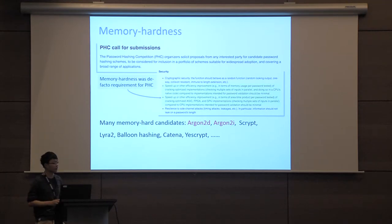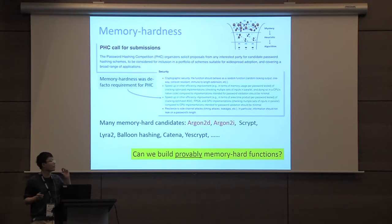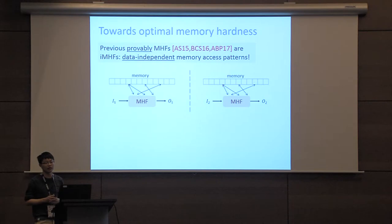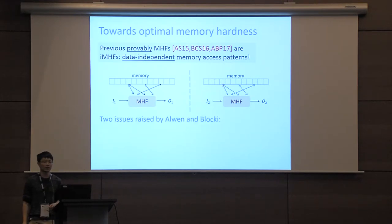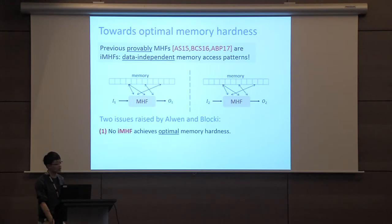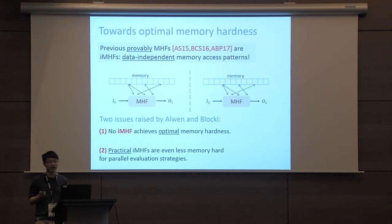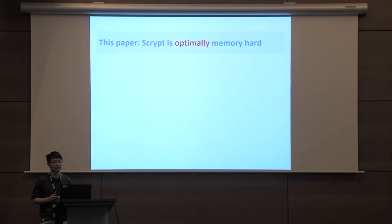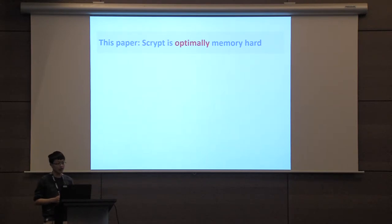Ideally we would like to prove that these functions are memory hard, but finding such proofs is a difficult problem. The answer is yes — several elegant MHFs were designed and proved to have memory hardness. However, these MHFs belong to the category of IMHFs whose memory access patterns are input-independent. Recently, Alvin and Blocki raised two issues: no IMHFs can achieve optimal memory hardness, and many practical IMHFs are vulnerable to parallel attacks. Facing these issues, we ask if data dependence can help.